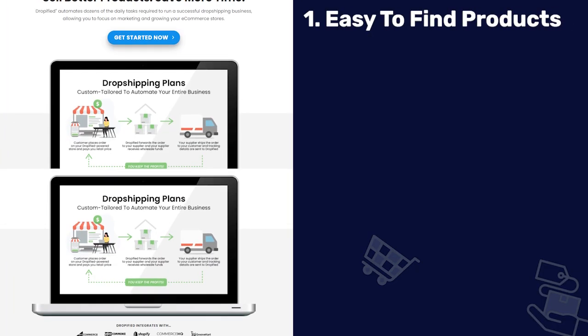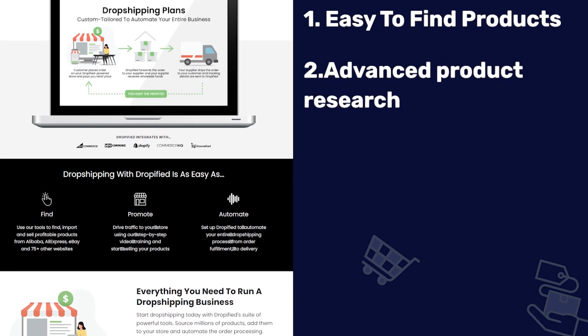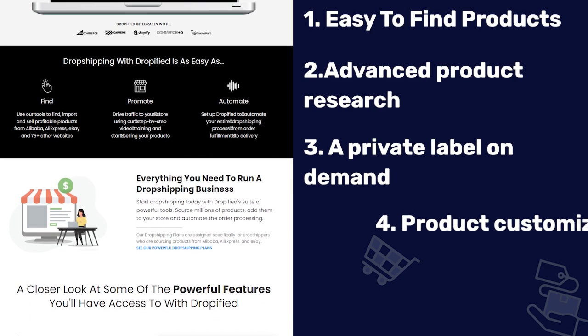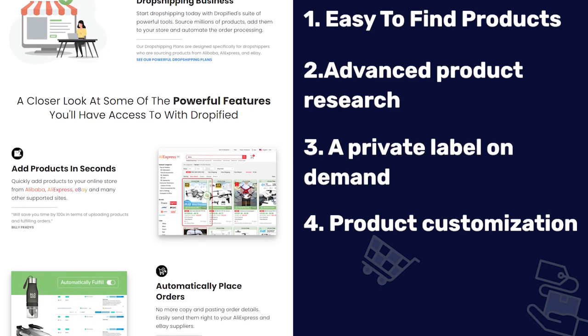Our sixth Oberlo alternative is Dropified. They have a great product research tool to find winning products, plus private label on-demand and product customization features — you can brand and sell products like coffee and skincare. With its customization options, Dropified lets you edit product titles, descriptions, and more so your products stand out. They're compatible with Shopify, CommerceHQ, WooCommerce, and BigCommerce.